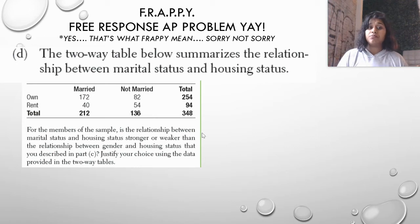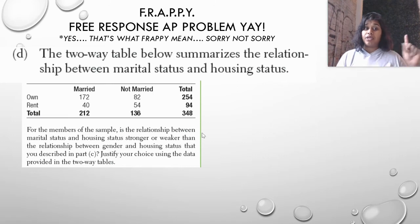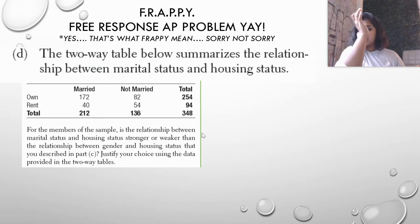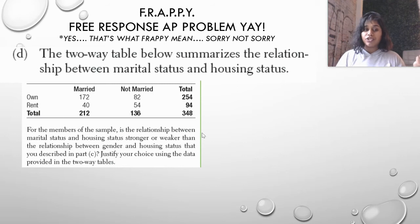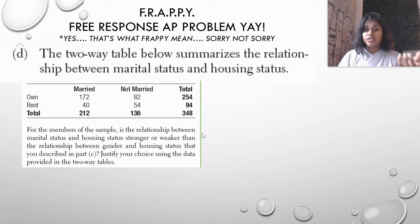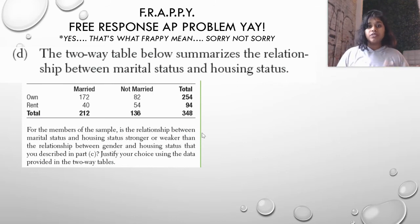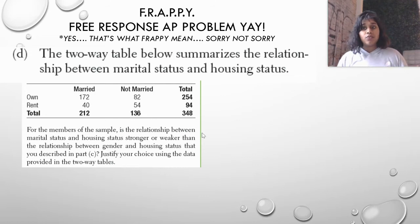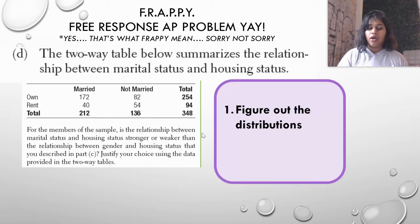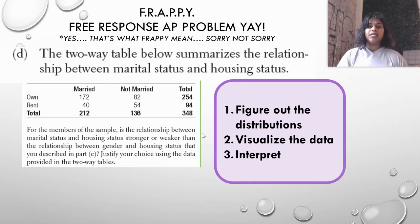The two-way table now summarizes marital status and housing status. Remember, we're comparing C to D — in C there was really no relationship or association. Now we'll compare that to marital status versus ownership and rent, and justify our choice using the data. To justify using data, we need to create conditional distributions and visualize them with a bar graph, just like we did for C, then compare.